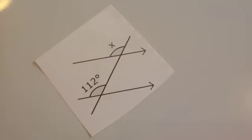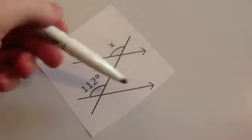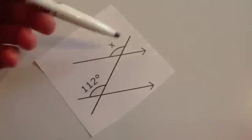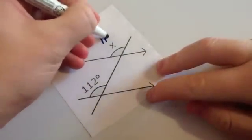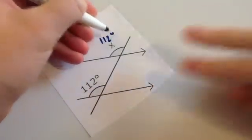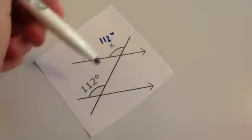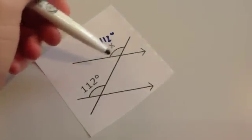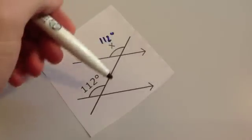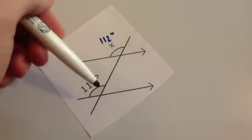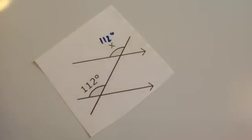Let's have a look at some examples. With two parallel lines and a line that cuts them, if this was 112 degrees, this would also be 112 degrees. These would be corresponding angles — this angle corresponds to this one as the line cuts both parallel lines, so they would be the same because they're corresponding.